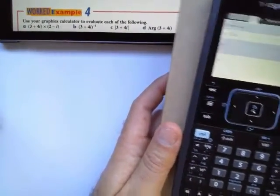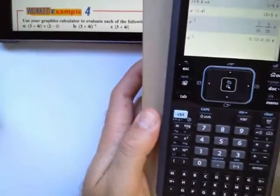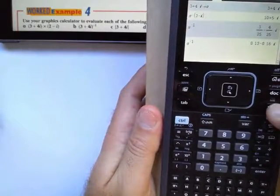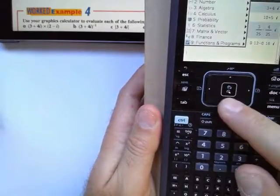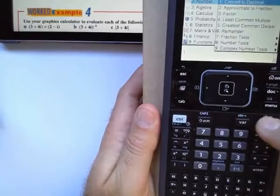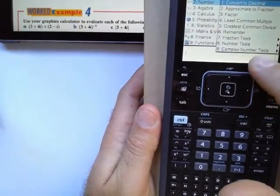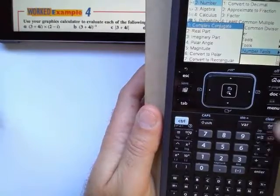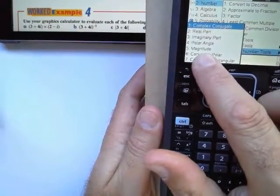With the magnitude, I can find the magnitude of that value a. So to do this, I'm going to find the menu. I'm going to use number, which is 2. I'm going to use the complex number tools, which is 9, or you can scroll down.